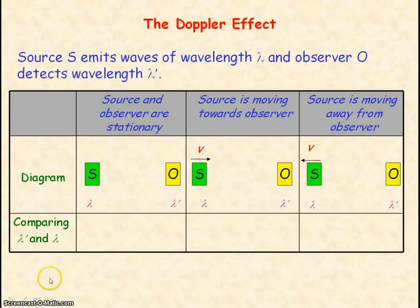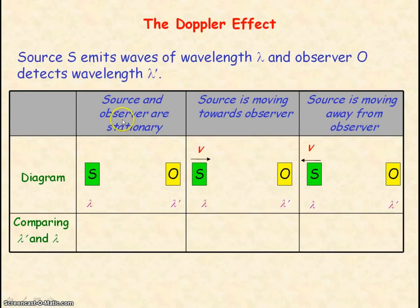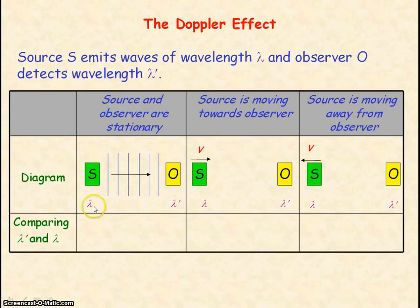We have source S emitting waves of wavelength lambda and observer O that detects wavelength lambda prime. If the source and the observer are stationary, then the observer will detect a wavelength that equals the wavelength emitted from the source — so lambda prime will equal lambda.